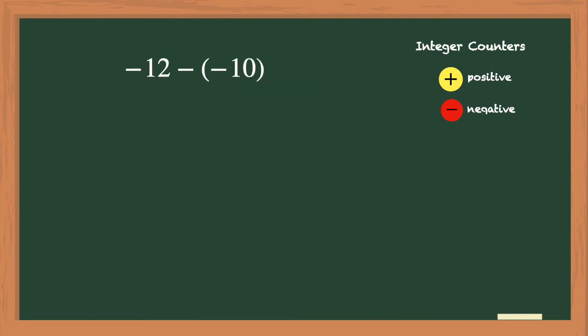Now we have negative 12 minus another negative number, negative 10. First, we'll place 12 negative counters on the screen. Then we'll look at the minus negative 10. This means that we need to remove 10 negative counters. This time, we do have negative counters to remove, so we will not need to use any zero pairs.